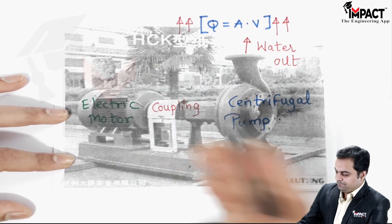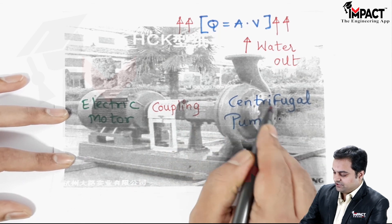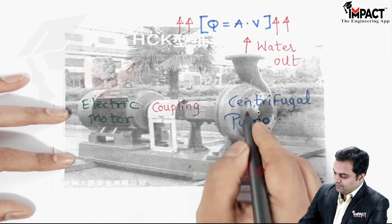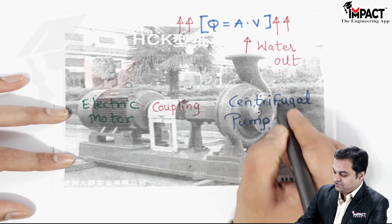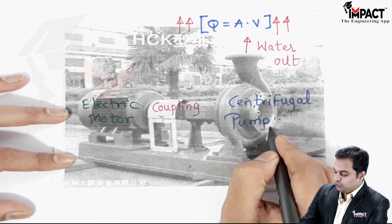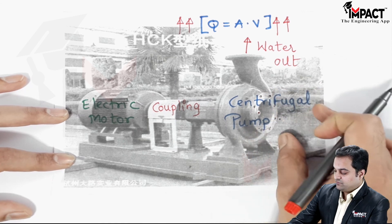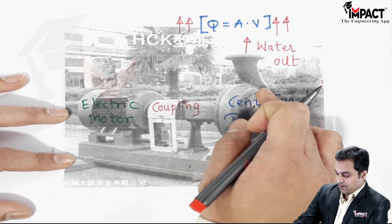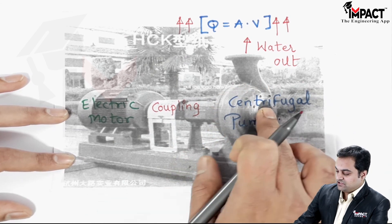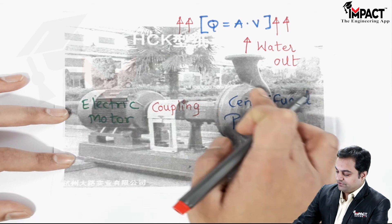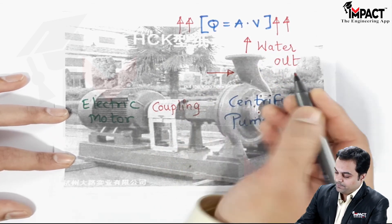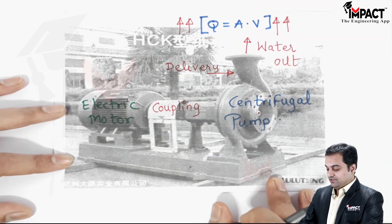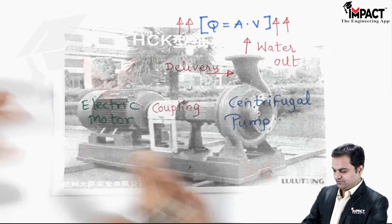The center portion of the centrifugal pump is called the impeller, which consists of the suction eye to which the suction pipe is connected via a flanged joint with bolt holes. The suction pipe goes into the ground to draw in water. The pump delivers water away from the center — that is why it is called a centrifugal pump — and discharges it through the delivery pipe.